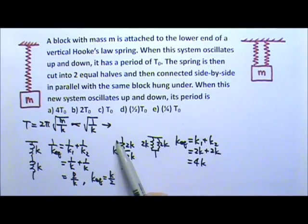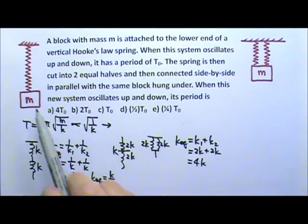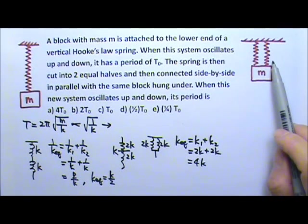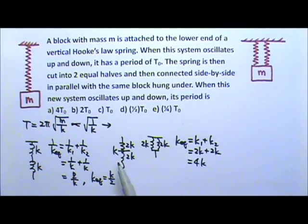We started with a spring with a force constant K, and then end with these two in parallel, 4K. So the force constant has changed by a factor of 4.